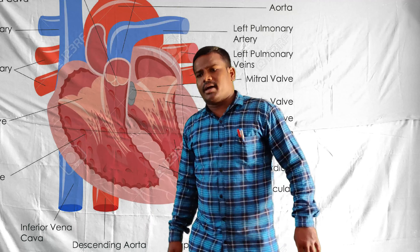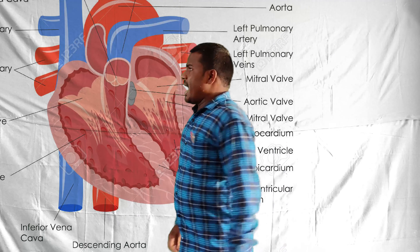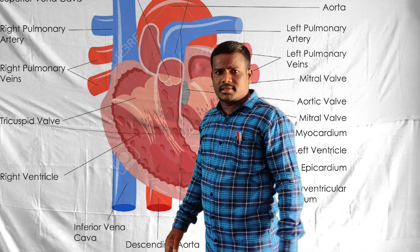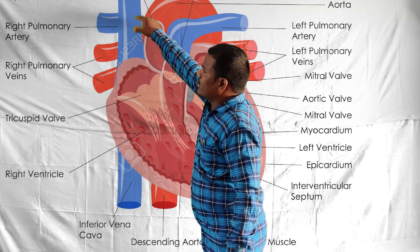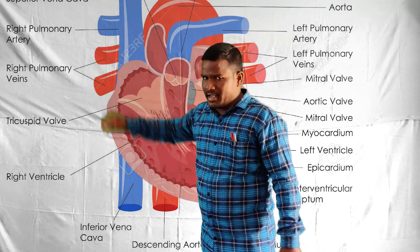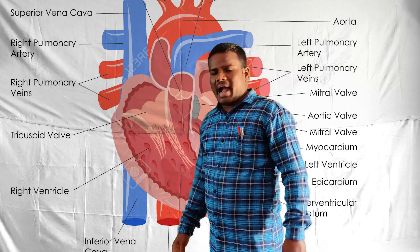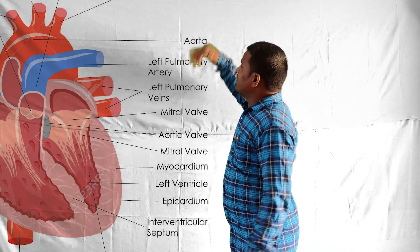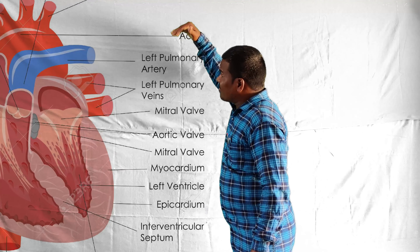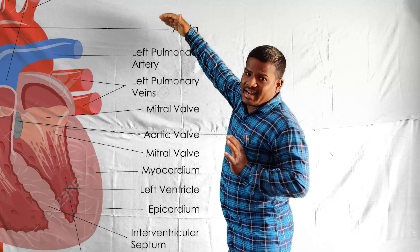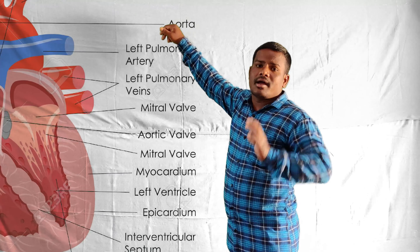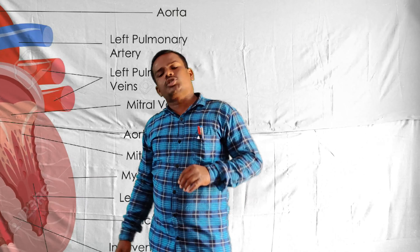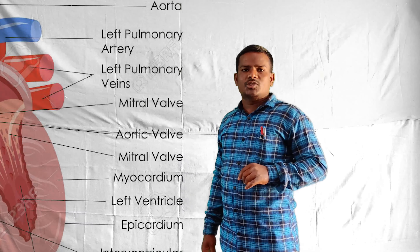The human heart has two atria and two ventricles. Upper chambers are two atria and lower chambers are two ventricles. On the right side of the heart there are two chambers: the upper chamber is the right atrium and the lower chamber is the right ventricle. On the left side of the heart, the upper chamber is the left atrium and the lower chamber is the left ventricle.